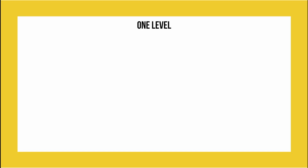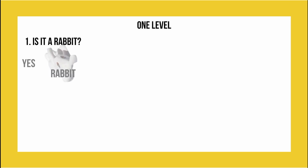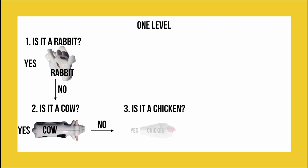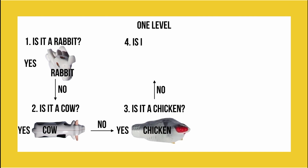The first method we are using is called a one-level method. In this method we list each animal in order and ask a question each time referring specifically to that one animal. For example, here we start by asking: is it a rabbit? If it is, then you have reached your animal, but if it isn't then we move on to the next question. In our case we then ask: is it a cow? If yes, then you've reached your animal, and if no, we move on to the next in the series, and this goes on for all of our animals.